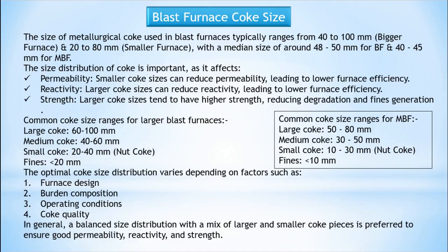Blast furnace coke size: typically ranges from 40–100 mm for bigger furnaces and 20–80 mm for smaller furnaces, with a median size of around 48–50 mm for BF and 40–45 mm for MBF. The size distribution affects permeability — smaller coke sizes can reduce permeability, leading to lower furnace efficiency. Larger coke sizes can reduce reactivity. Larger coke sizes tend to have higher strength, reducing degradation and fines generation. Common size ranges for larger blast furnaces: large coke 60–100 mm, medium coke 40–60 mm, small coke 20–40 mm, fines less than 20 mm.